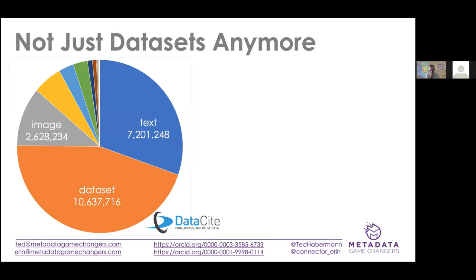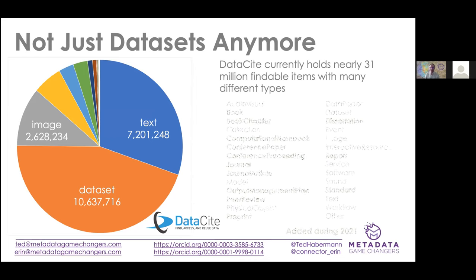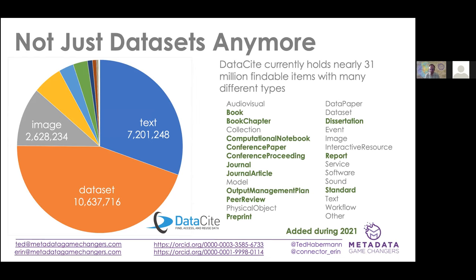The global infrastructure is not just journal articles or datasets anymore. Datacite includes nearly 31 million findable items with many different types, and those types are in the metadata. The things listed in green were added in the most recent version of the Datacite metadata schema, which came out just about a year ago.